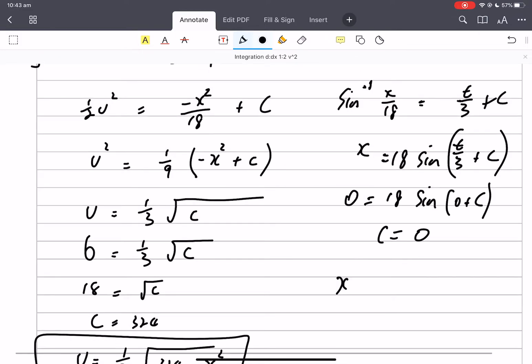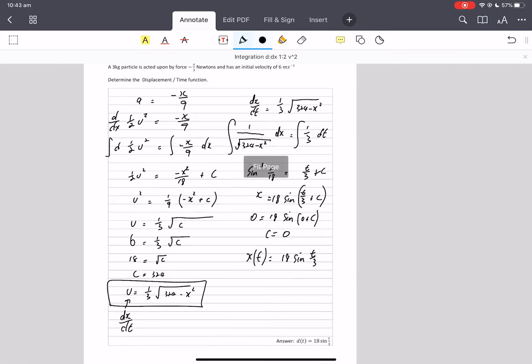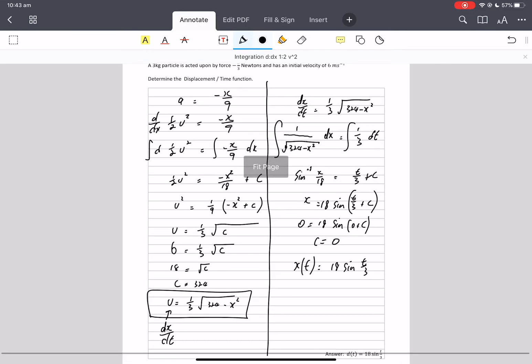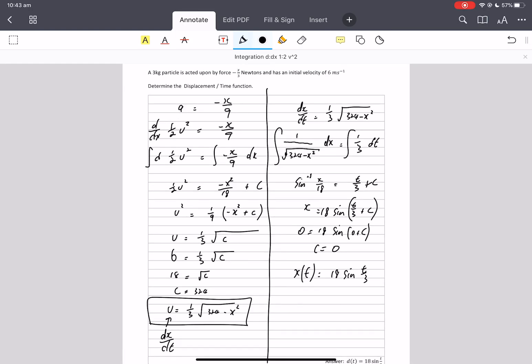So we get our displacement time graph as 18 sine t on three. So I know I took two columns there, but there you go. It's all on one page.